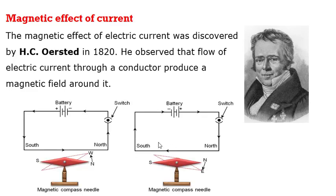Here we can see one circuit. Below that there is a magnetic compass, or we can say there is a magnetic needle. Now when we switch on the circuit, or when we close the key, then current starts flowing in the battery. It flows from south to north direction. Then we observe that the north pole of the magnet deflects towards the west. In the second diagram we can see that when we reverse the direction of current then the north pole of the magnetic needle deflects towards the east.